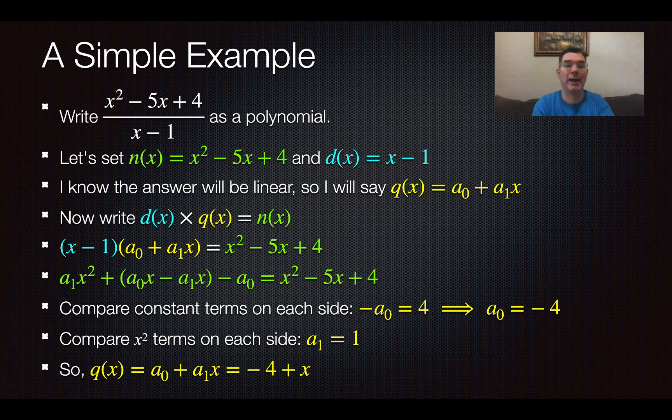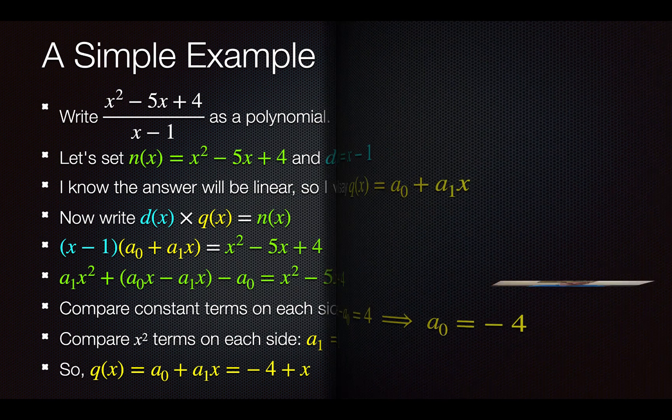Yes, I could have figured that out using factoring and all of that. But my whole point here was to show you the process with something that we could do another way, just so that I knew that my answer was right. I knew that if I divided that, I was going to get x minus 4. And this just proves that the process is going to work and give us a good answer, so that when we do things that are more complicated, I can feel better about the accuracy of my answer.